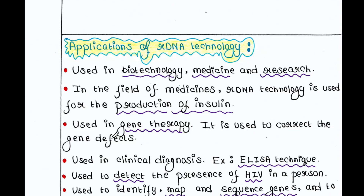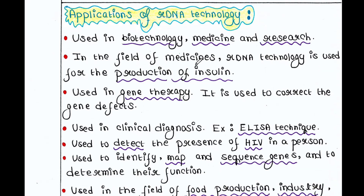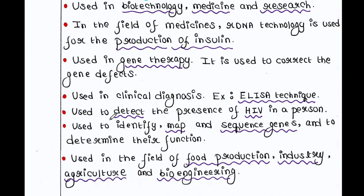Now let's talk about the applications of R-DNA technology. R-DNA technology is used in biotechnology, medicine and research. In the field of medicine, it is used for the production of insulin, in gene therapy to correct gene defects, in clinical diagnosis, and in the ELISA technique to detect the presence of HIV in a person. It is also used to identify, map and sequence genes and to determine their function. It is also used in food production, industry, agriculture and bioengineering.